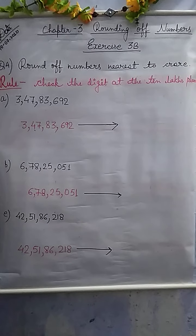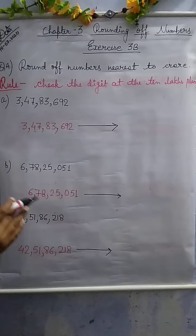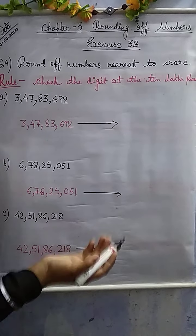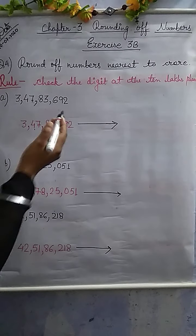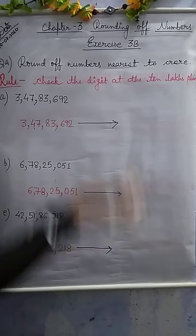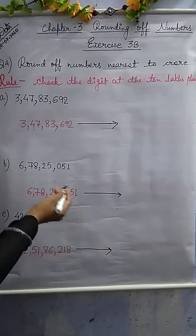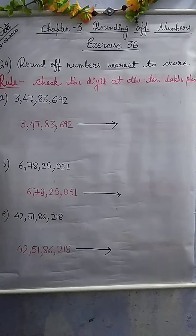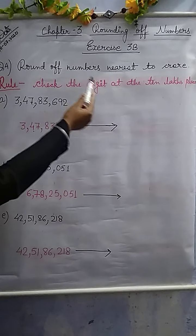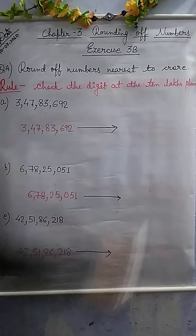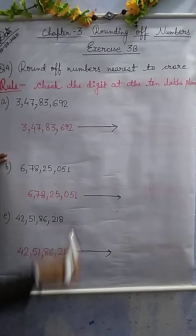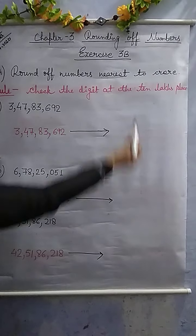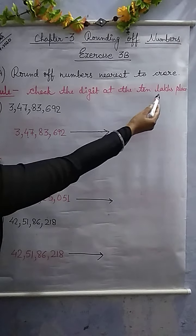So, what we have to do in different questions — jis bhi number ka, jiske bhi nearest aapko round off nikalna hai, hum uske pehle place ko check kar rahe hain. So in this question, round off numbers nearest to crore. The rule is: before crore, there is the 10 lakhs place.